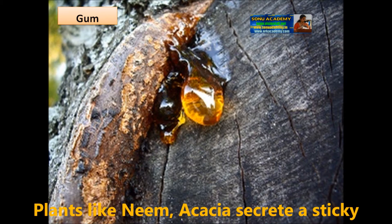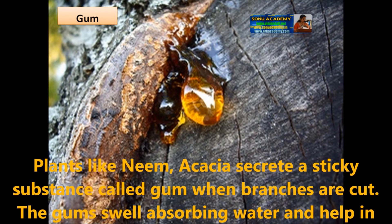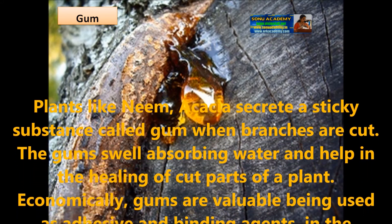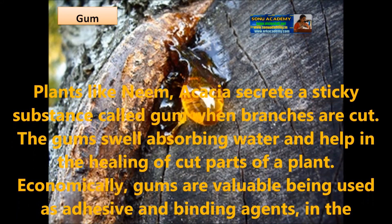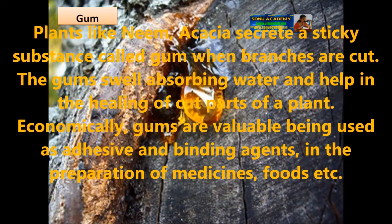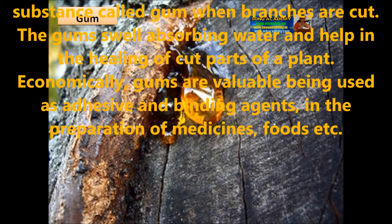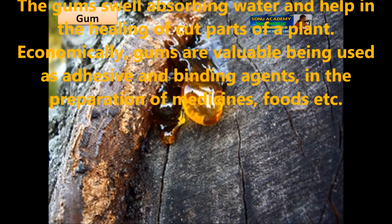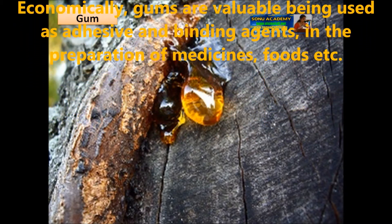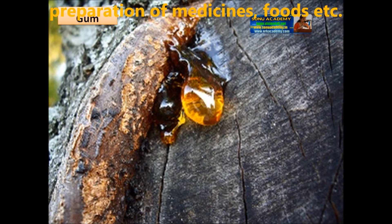Plants like neem and acacia secrete a sticky substance called gum when the branches are cut. The gums swell absorbing water and help in the healing of cut parts of the plant. Economically, gums are valuable, being used as adhesive and binding agents in the preparation of medicines, foods, etc.